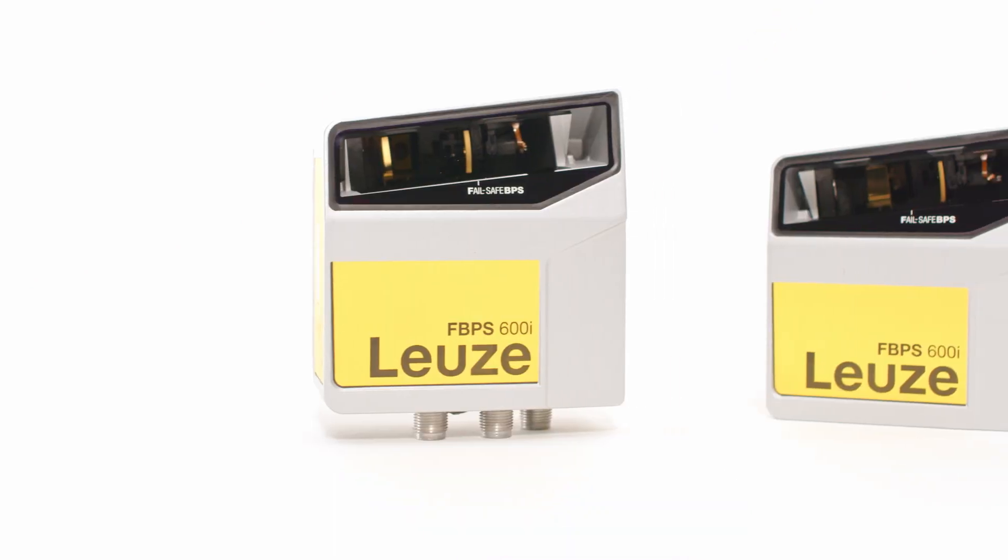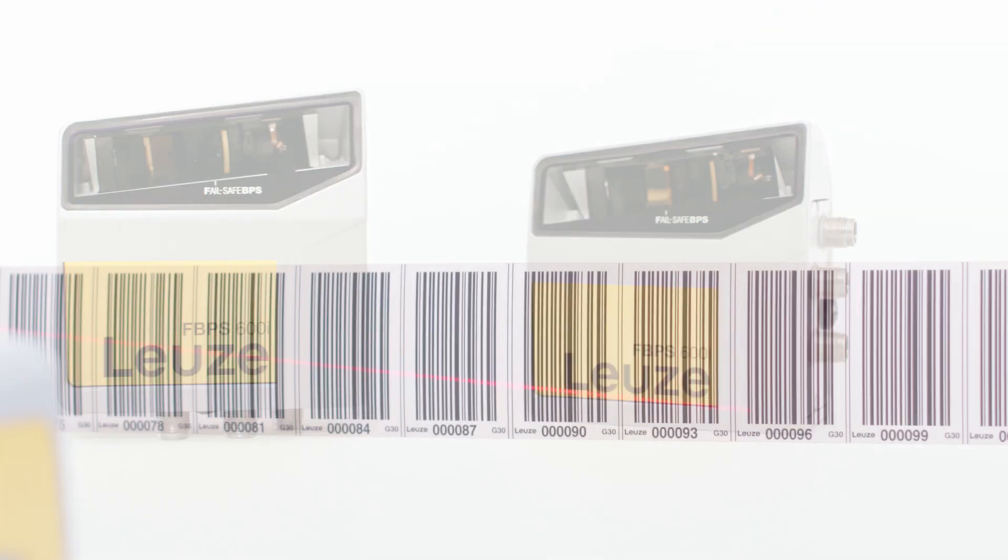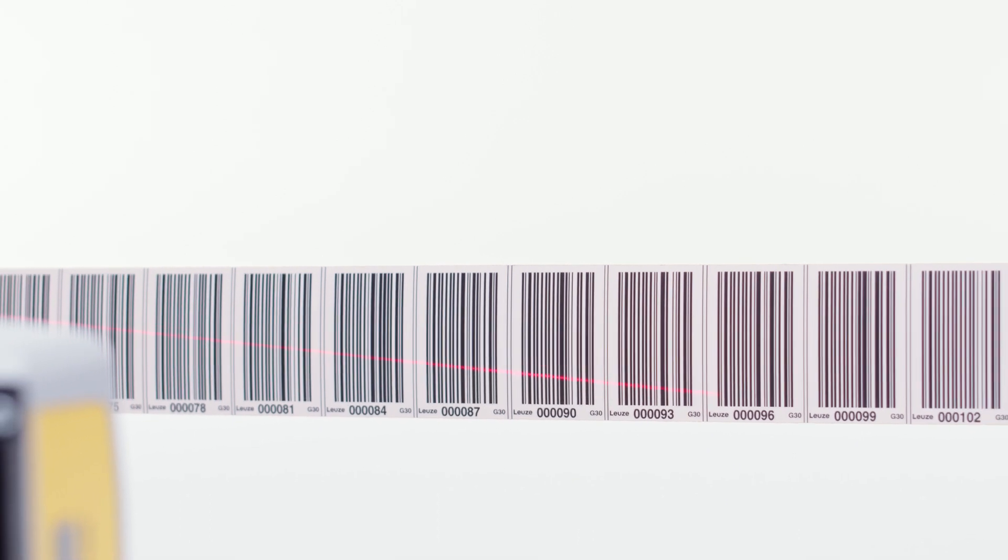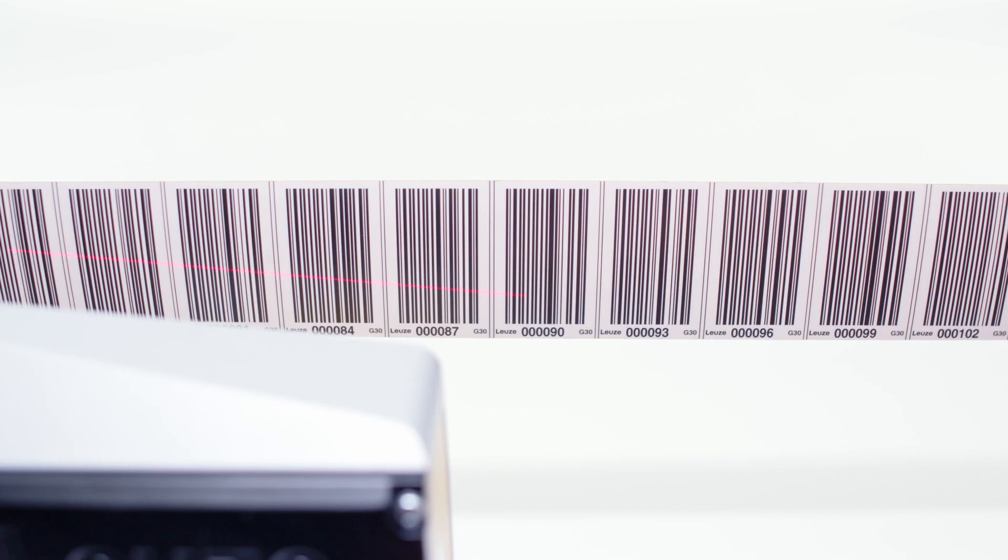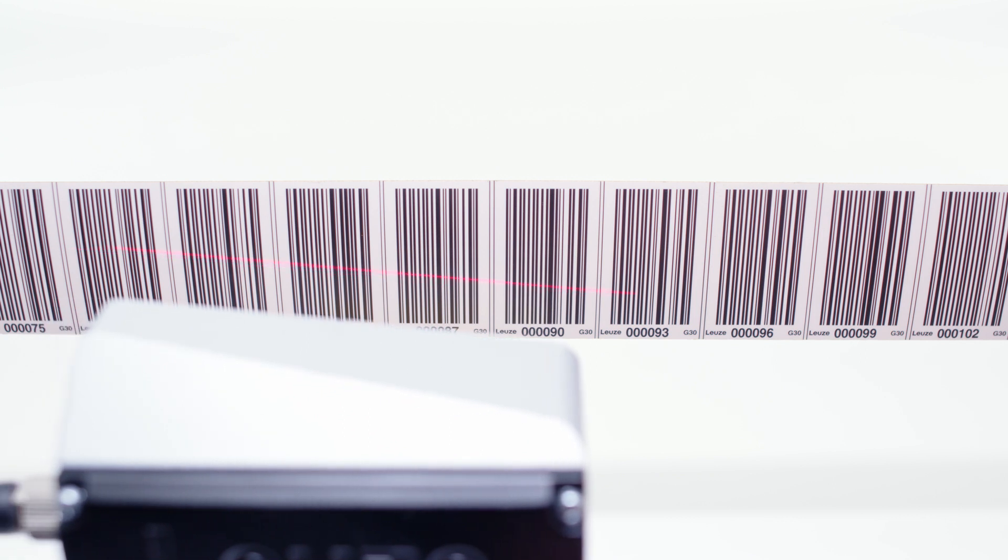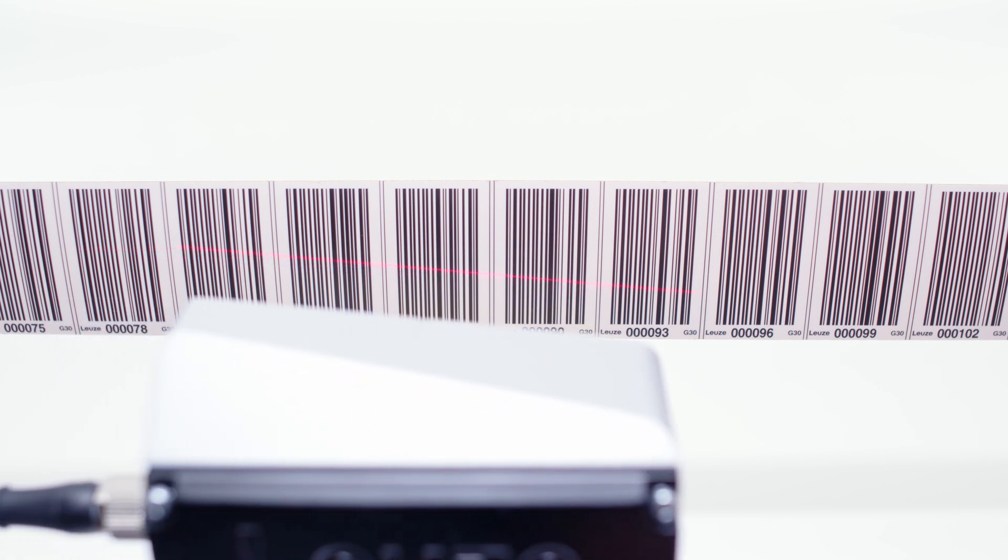The FBPS 600i works particularly reliably. Each scanning operation reads several codes from which position values are determined. The diagonal path of the scanning beam and device movement mean that each code is scanned at different points.